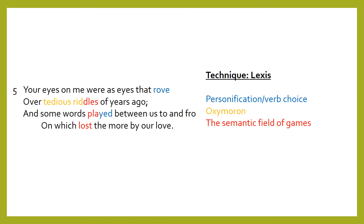Next we are going to look at lexis, or the words chosen. We have personification in the choice of verbs, we have oxymoron where two words that don't go together are put together, and we have words connected to games — so they are from the semantic field of games.